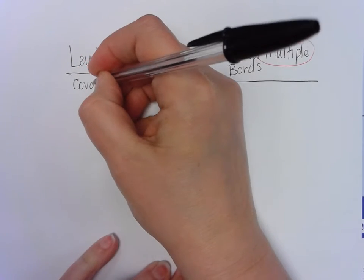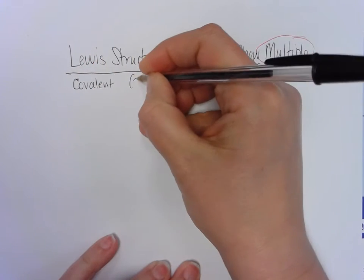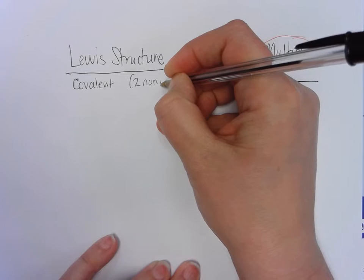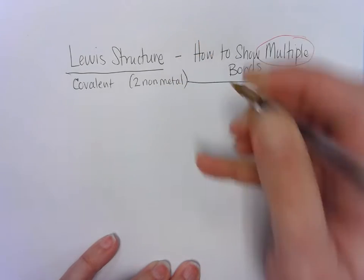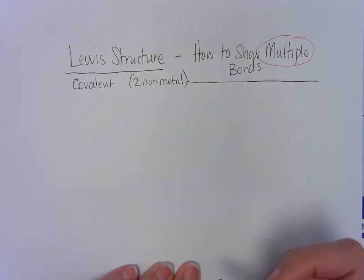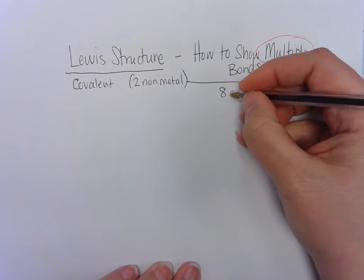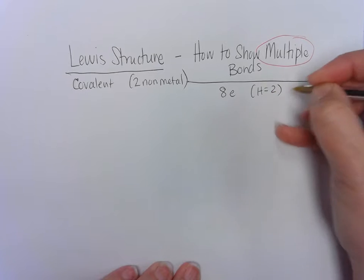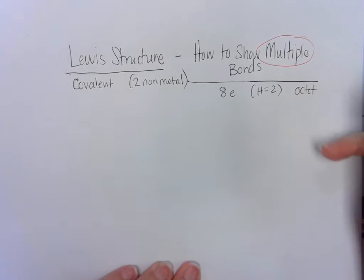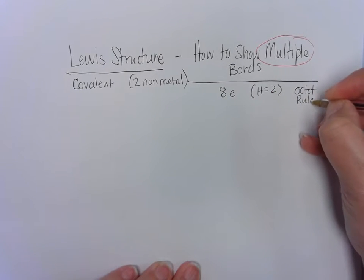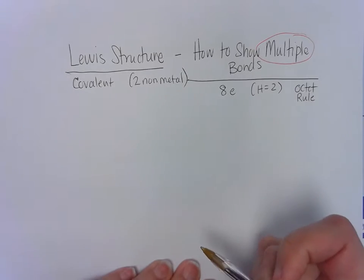Remember, it is still covalent, and these are two non-metals or more, depending on what's in your formula. As with the last time, we are still following the octet rule, which said eight electrons except for hydrogen, which gets to have two. You still follow that rule. In fact, you follow it all the time, whether it's ionic or covalent.